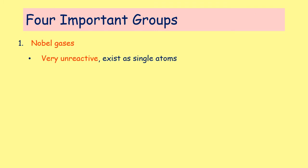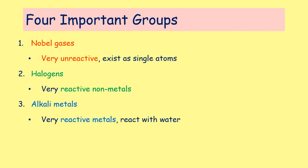The noble gases on the far right are very unreactive — they exist as single atoms and do not react with other chemicals. The halogens, the group beside the noble gases, are non-metals but very, very reactive. The alkali metals in the first column are metals and very, very reactive — so reactive that if you put them in water, some of them explode, others burst into flames, and others fizz. If you try to react a halogen with an alkali metal, you will always get an explosion. They are very, very reactive.